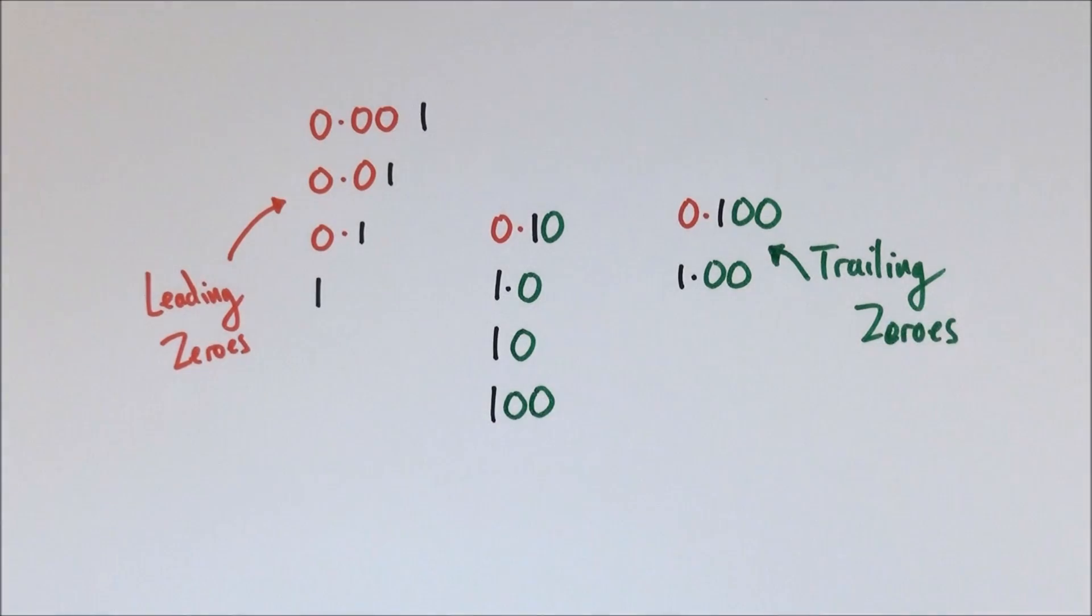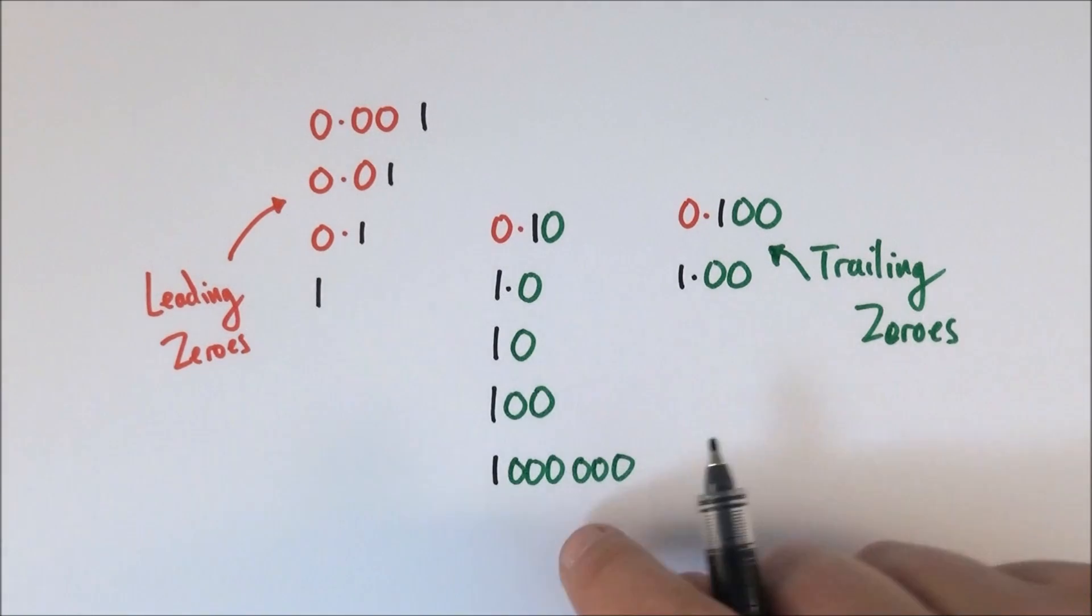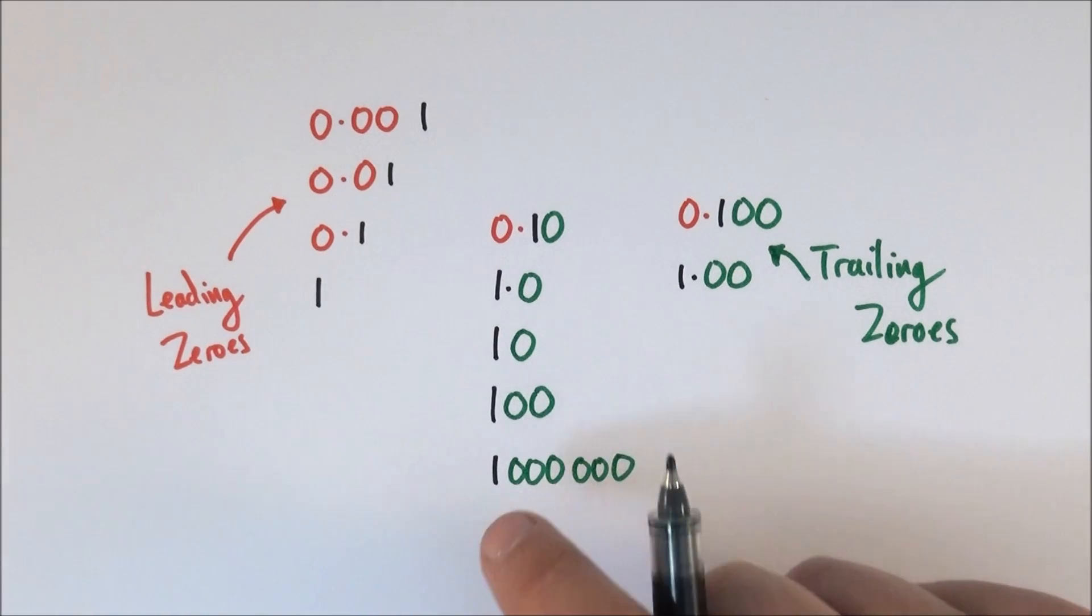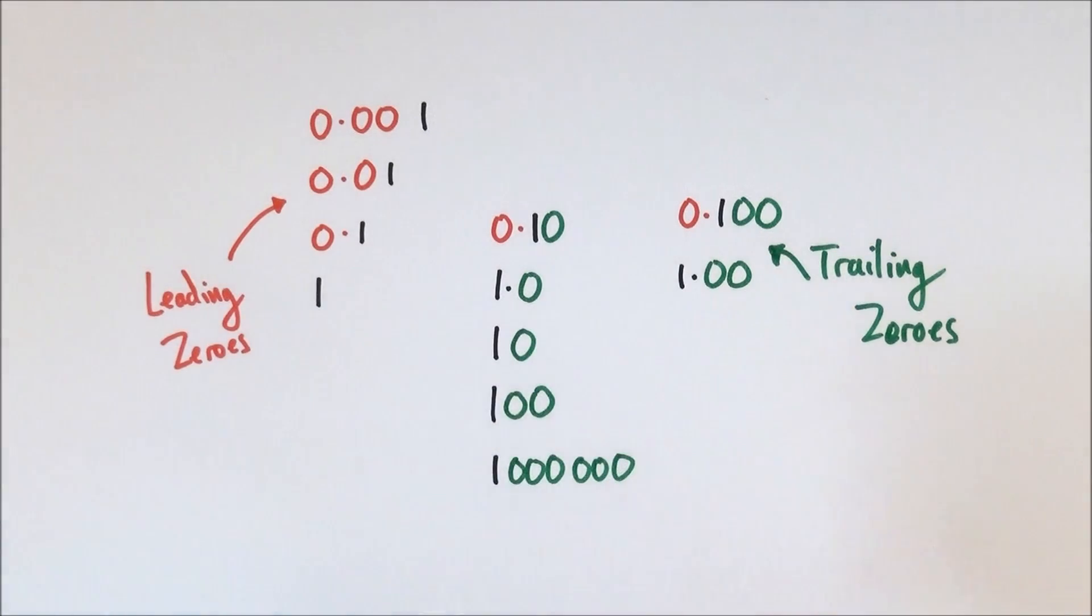So what about a million? By rights if you write a million like this that means we've got six trailing zeros and now what we have is the number one million to seven significant figures, but sometimes you want to display big numbers without that many significant figures and this is where standard form comes in.